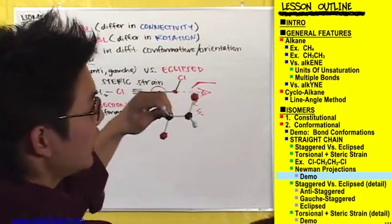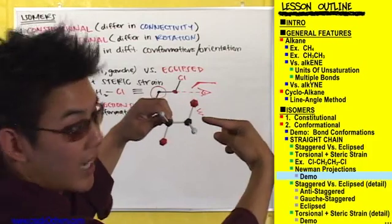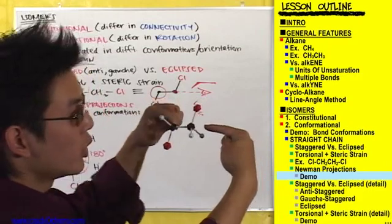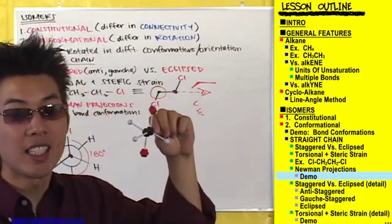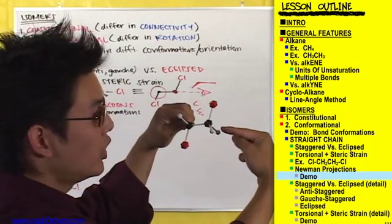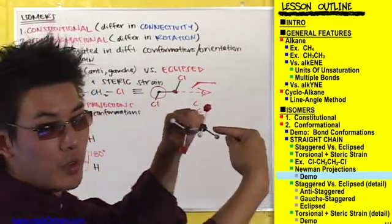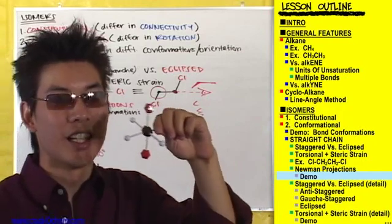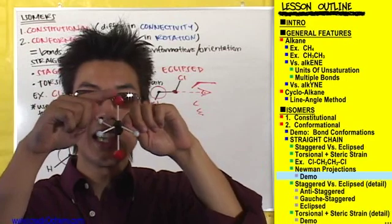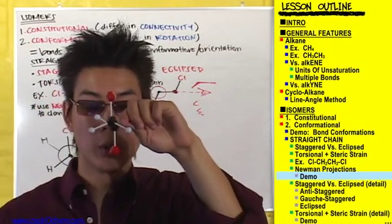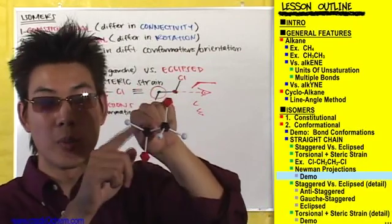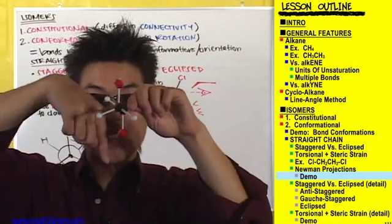So what we want to do is look at this thing from the side. What's cool with models is that we can just turn this model around so that it is like we're looking at it from the side. All you have to do is just physically turn the model in your hand so that this front carbon is now facing towards you. And if you do this, you can see exactly how these chlorines are oriented with one another. This chlorine on the front carbon is pointing straight up, and this chlorine on the back carbon is pointing straight down.